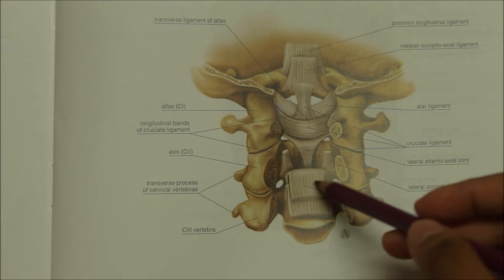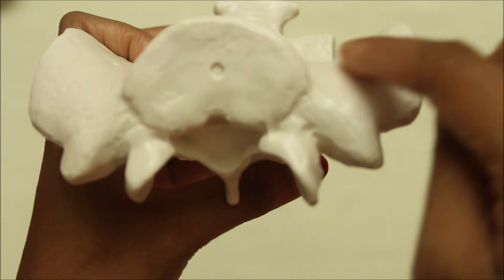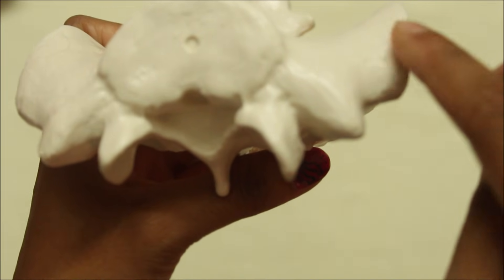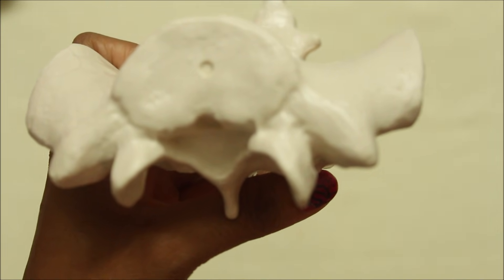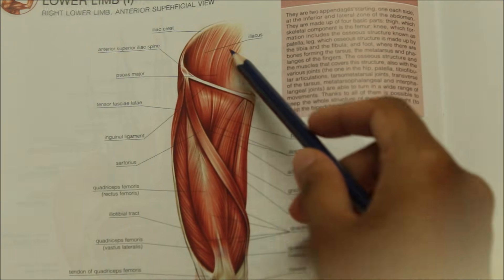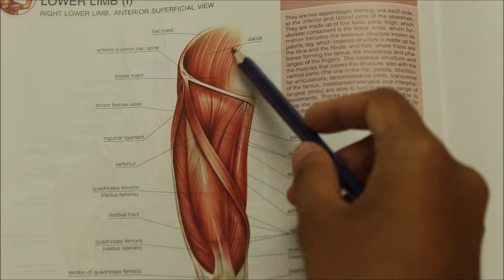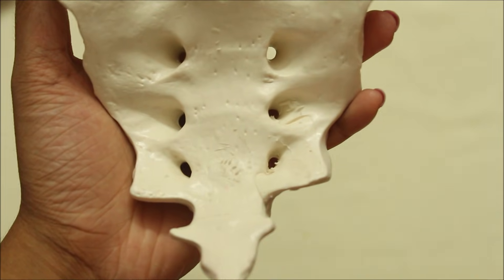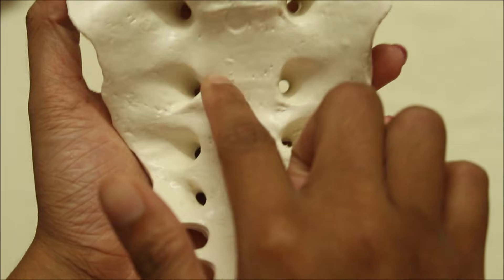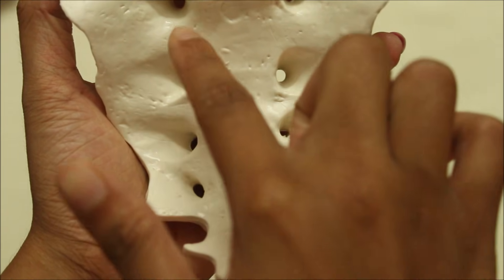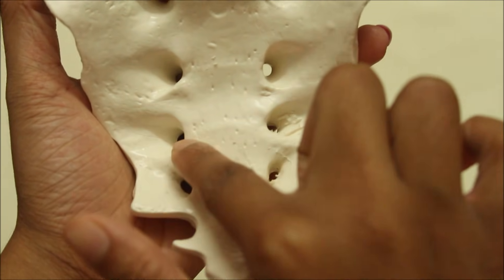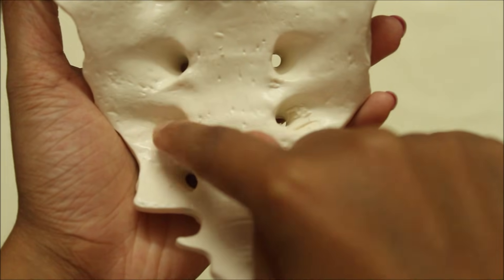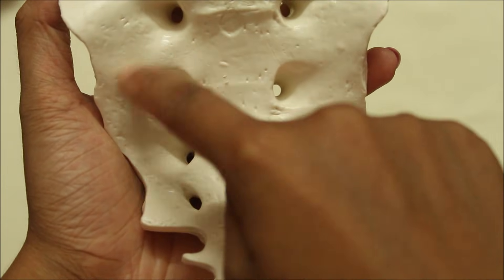The rough part of the ala gives origin to the iliacus anteriorly and attachment to the lumbosacral ligament posteriorly. The upper part of the ventral sacroiliac ligament is attached to its margin. The part of the pelvic surface lateral to the bodies of the middle three sacral vertebrae gives origin to the piriformis. This area extends into the intervals between the pelvic sacral foramina and is E-shaped.